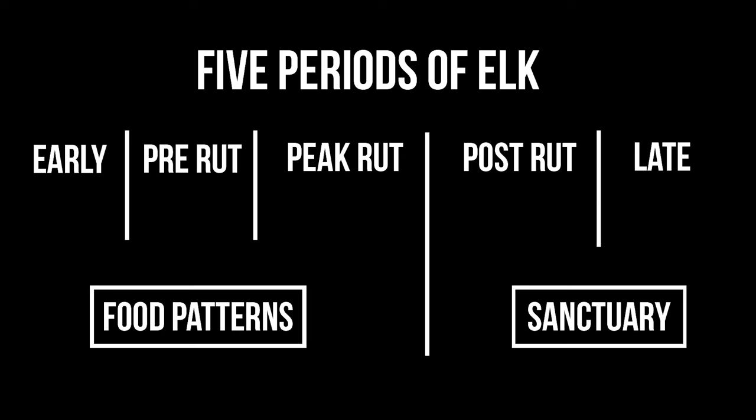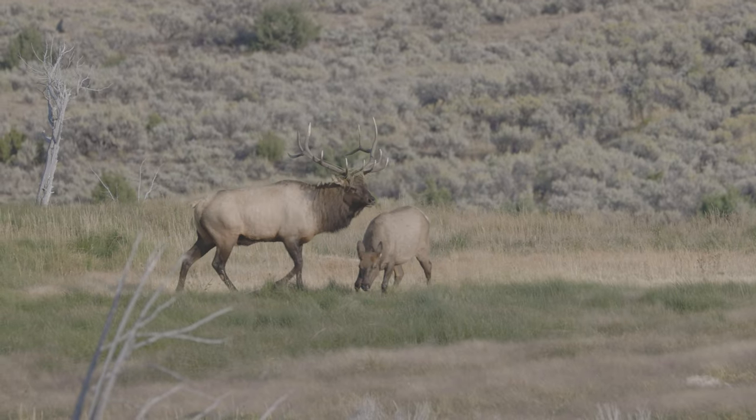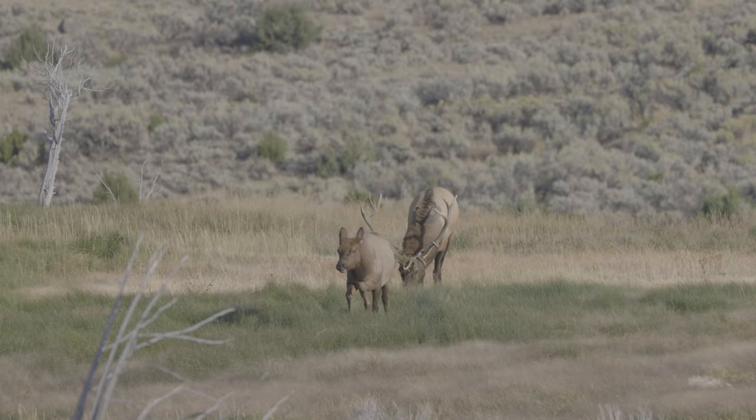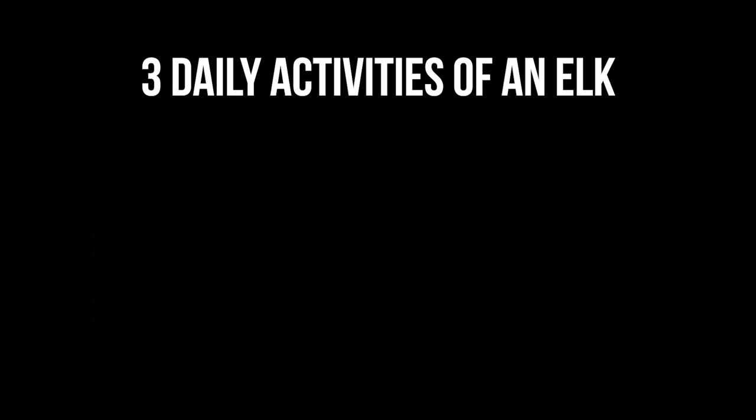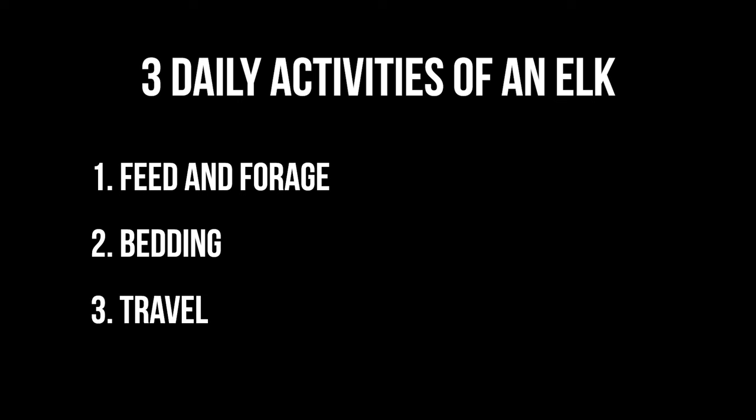Elk have three main activities in their day, and I try to understand these three basic activities and how elk are using their landscape on that day I'm hunting them — regardless of whether it's one of the food seasons of early, pre, or peak rut, or one of the sanctuary seasons of post rut and late rifle. From midnight to midnight, elk have three main activities, and my e-scouting is based on those. The three are: feed and forage, bedding, and travel.